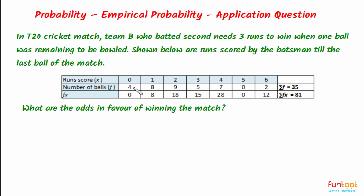The data shows that the batsman faced four balls in which he scored zero runs, in eight balls he scored one run, in nine balls he scored two runs, in five balls he scored three runs, and likewise. The sum of values in the balls row is 35, meaning the batsman faced a total of 35 balls.